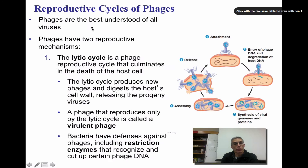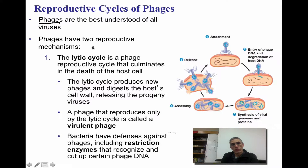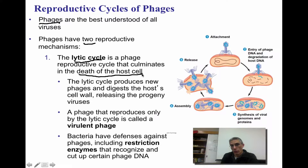That was the basic reproductive cycle for viruses. But one of the most heavily studied viruses is one called a phage. Phages actually have two reproductive mechanisms. The first reproductive mechanism is called the lytic cycle. The lytic cycle is when you have a phage that goes into a reproductive cycle, but that cycle culminates or ends with the death of the host cell.